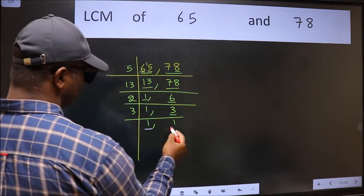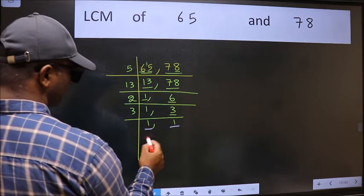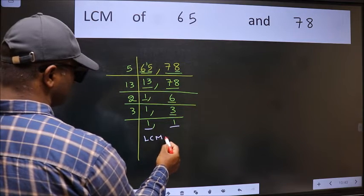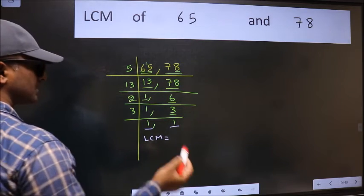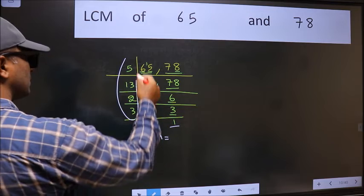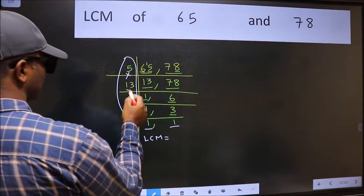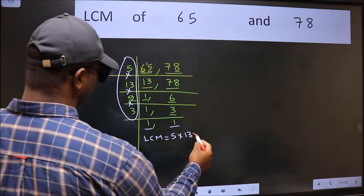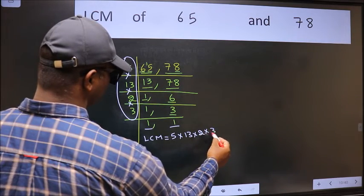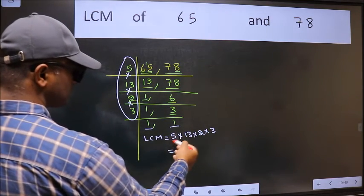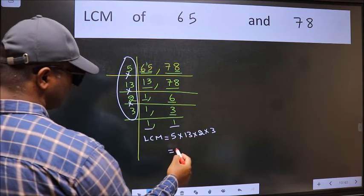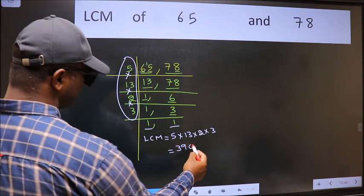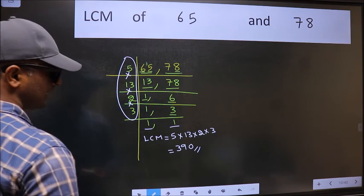We got 1 in both places, so our LCM is the product of these numbers. That is 5 into 13 into 2 into 3. When we multiply these numbers, we get 390 is our LCM. Here we go! See you next time!